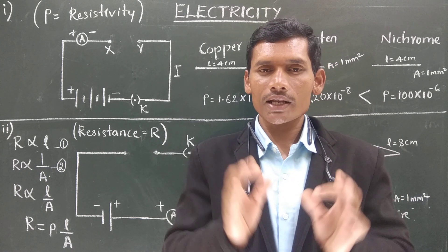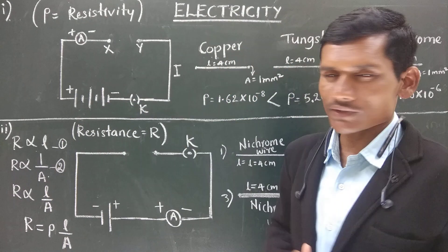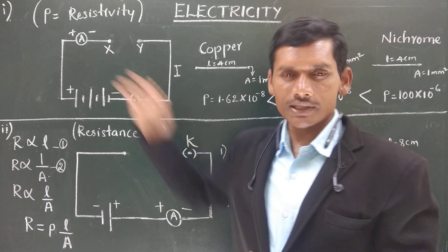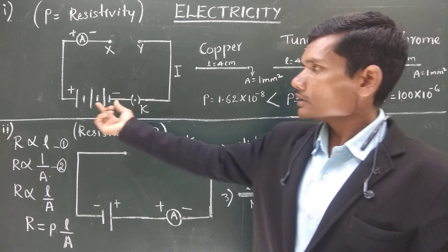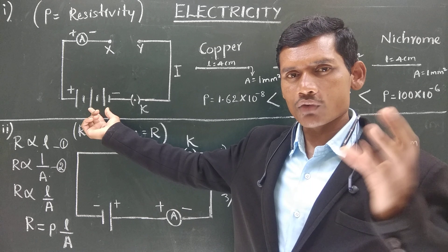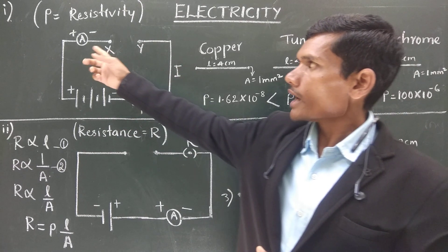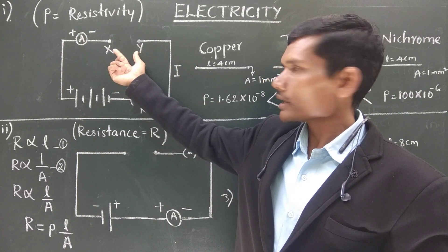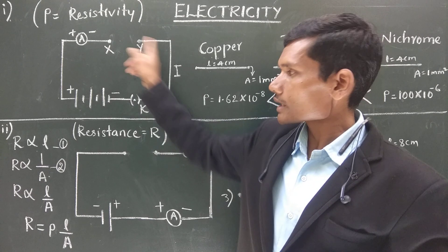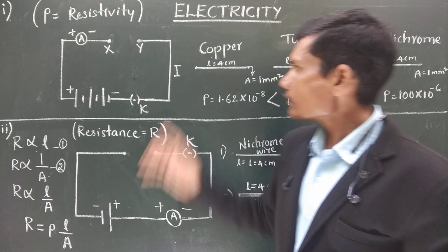In today's class let us look at two activities to understand what factors resistance depends on. In the first activity, we have an electrical circuit with three cells of 1.5 volts each connected in series, a plug key, an ammeter connected in series, and a gap XY. Into this gap we are going to insert different types of materials — these are the ends of the two wires connected to the battery.